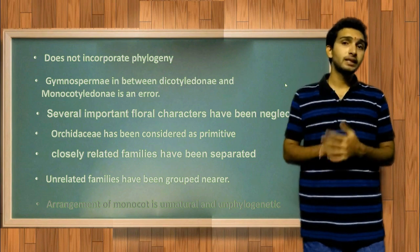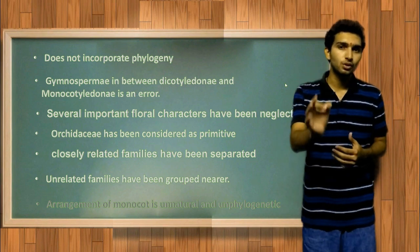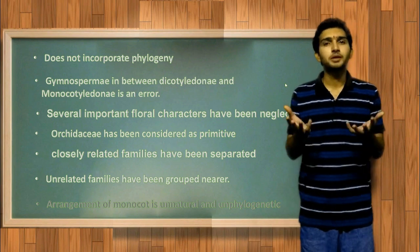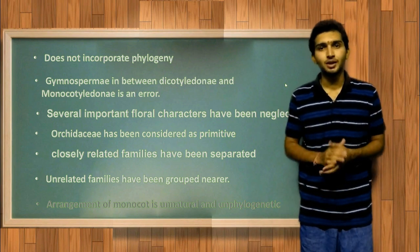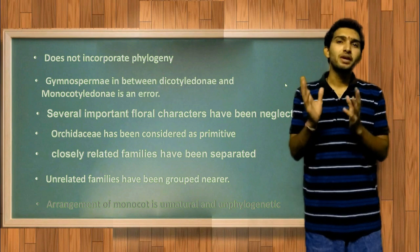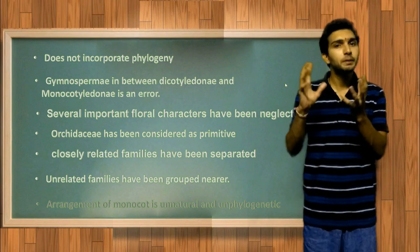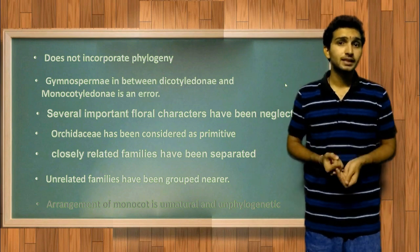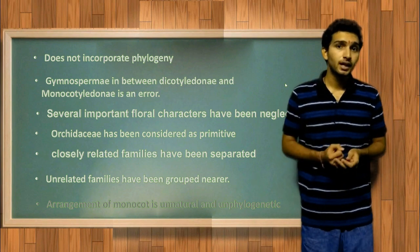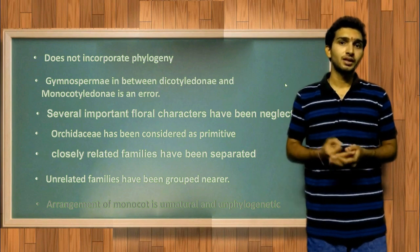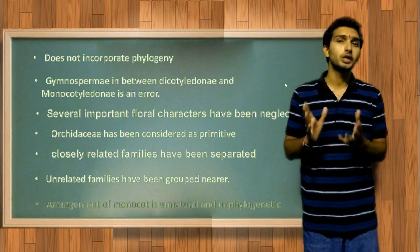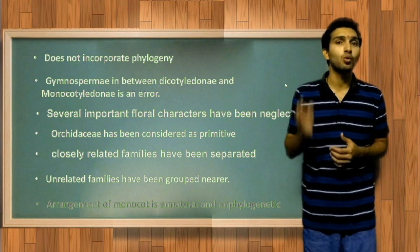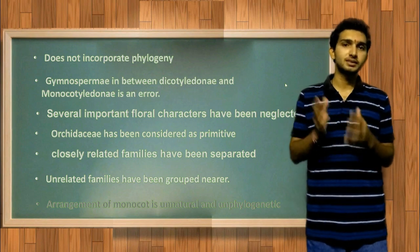One of the practically absurd points is that generally polypetalous flowers have two whorls with free petals. However, families like Ficoidaceae, Azoaceae, and Molluginaceae show flowers with only one kind of perianth whorl, where they actually deserve a place in Monochlamydeae instead of being placed elsewhere.